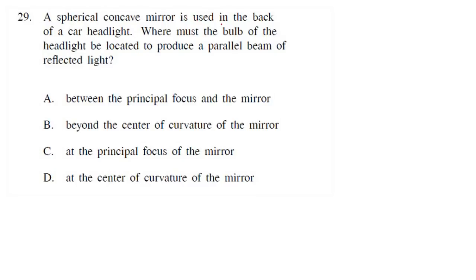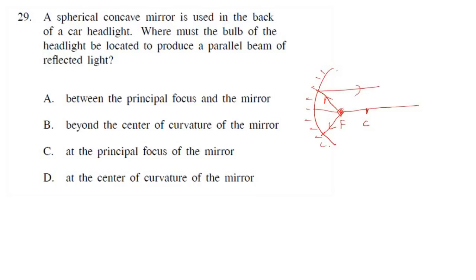A spherical concave mirror is used at the back of a headlight to produce a parallel beam. If you put the object at F, the rays come out from there and after reflection become parallel — parallel rays go to infinity. So the object should be placed at the principal focus of the mirror.